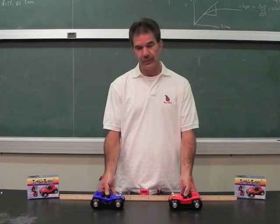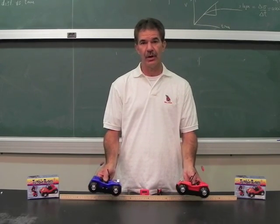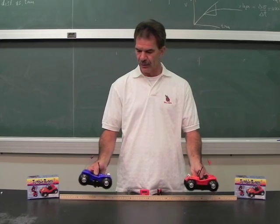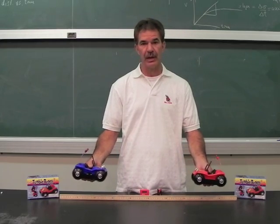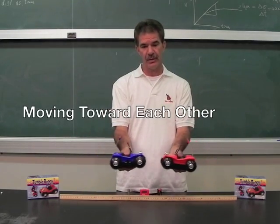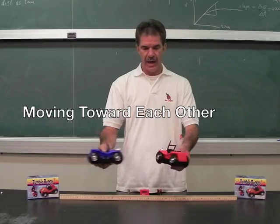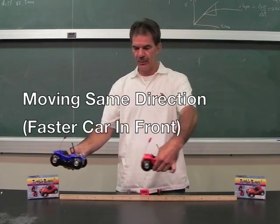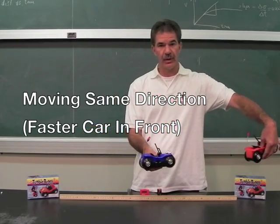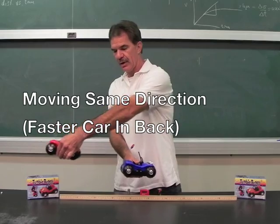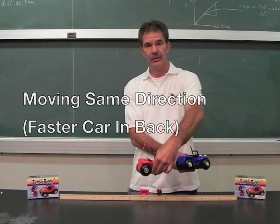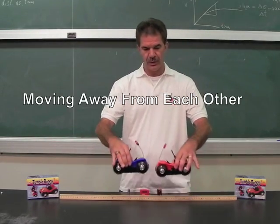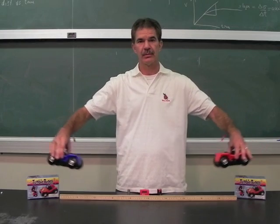Students can find the speeds of each car the normal way, and then we can get the relative speed as the two cars approach each other, as the faster car runs away from the slow car, as the faster car catches up to the slow car, and as the two cars move away from each other.